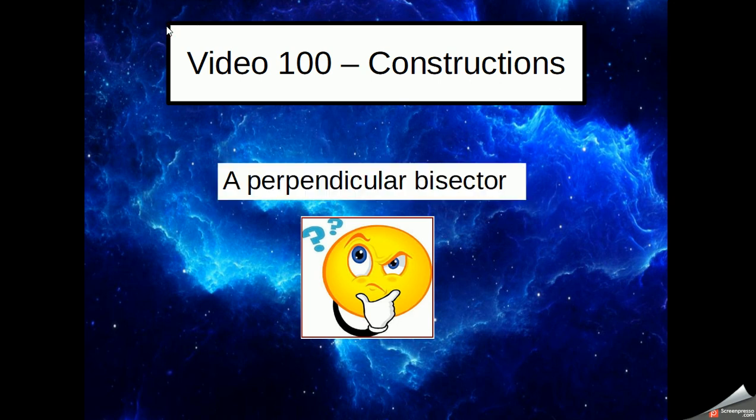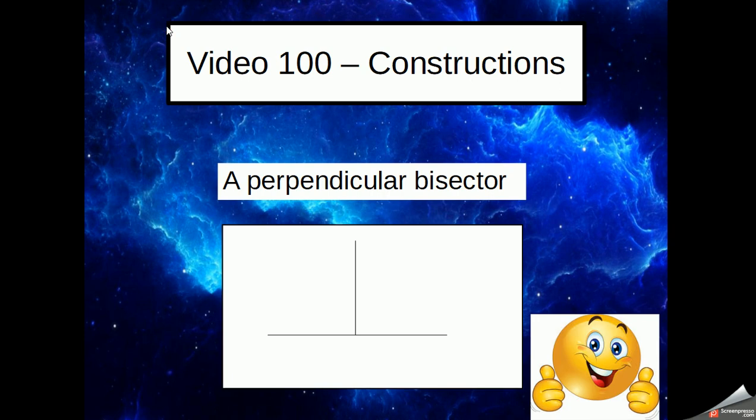Firstly, we've got what we call a perpendicular bisector. So, what is this? Well, a perpendicular bisector is a line that's perpendicular to another. We've talked about perpendicular lines in that they touch another at 90 degrees. And it directly cuts the second line in two.